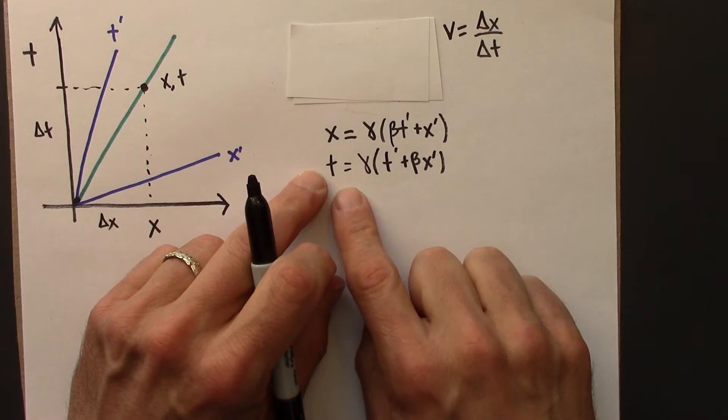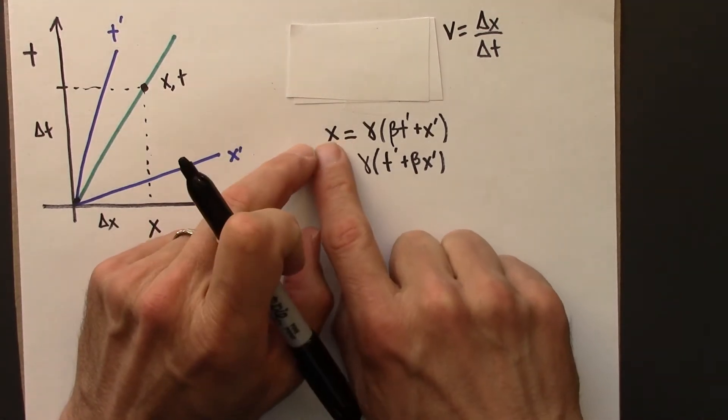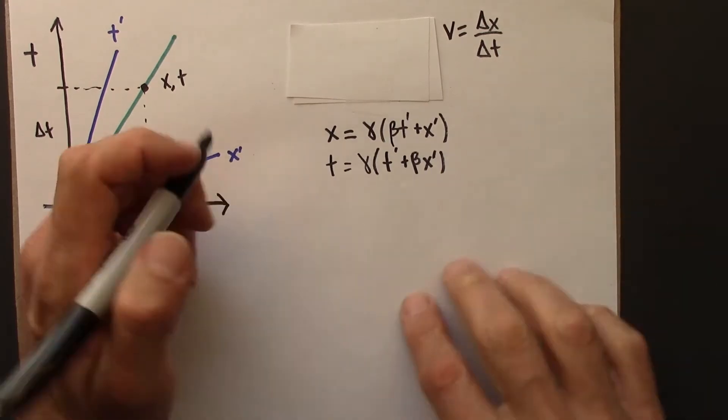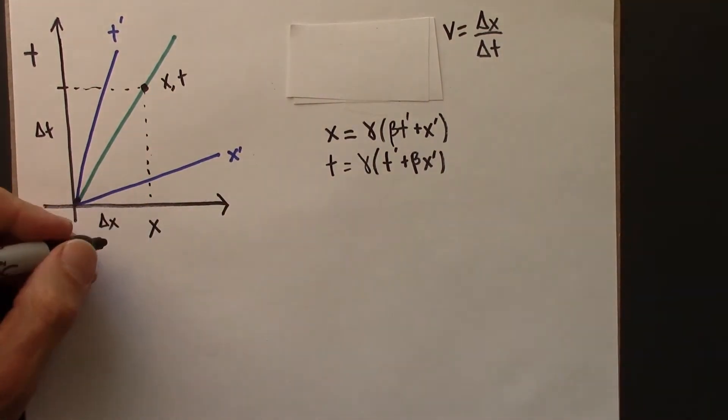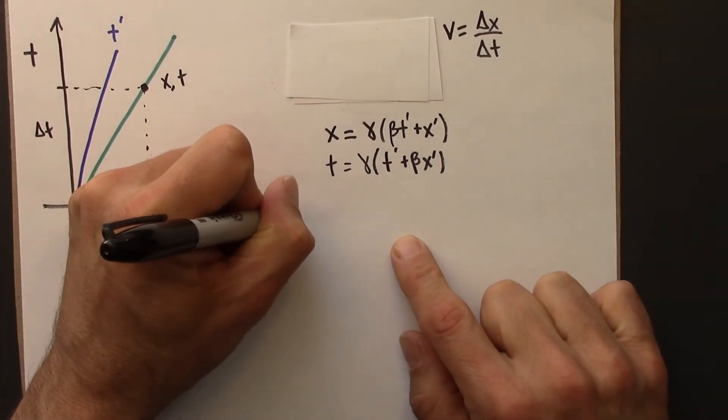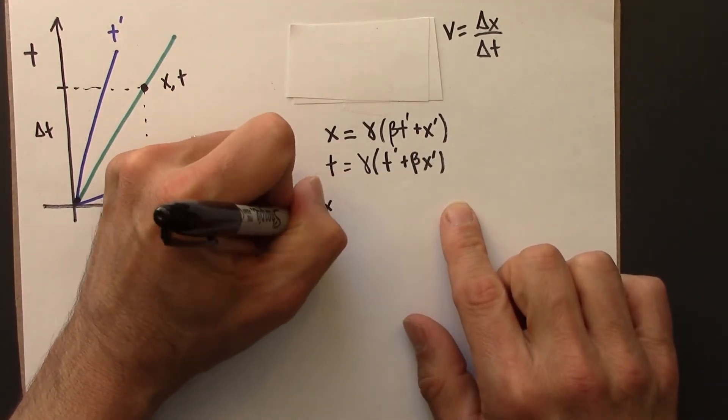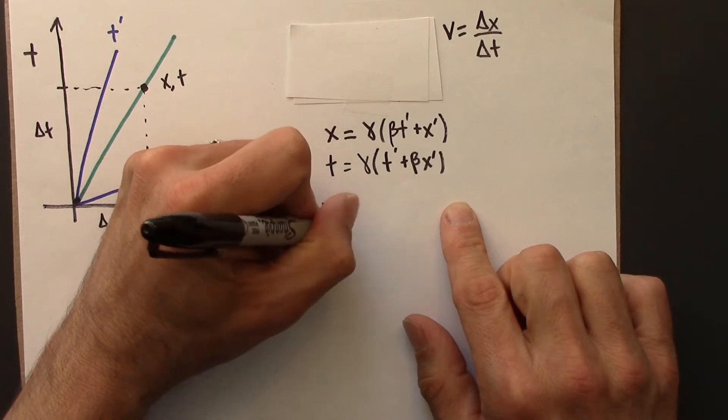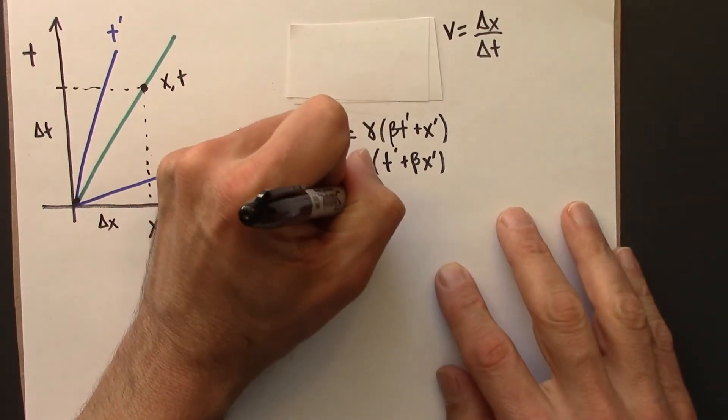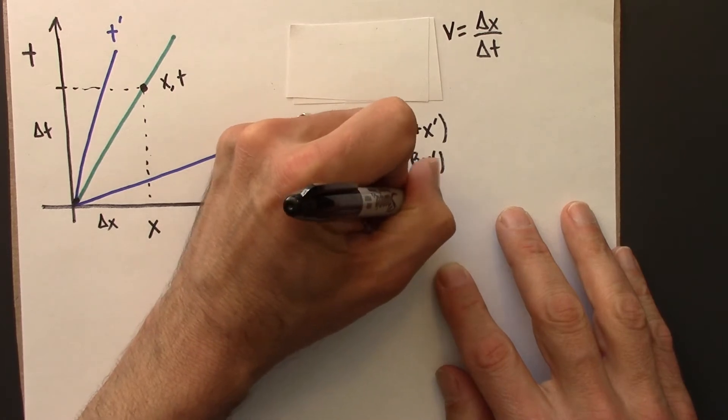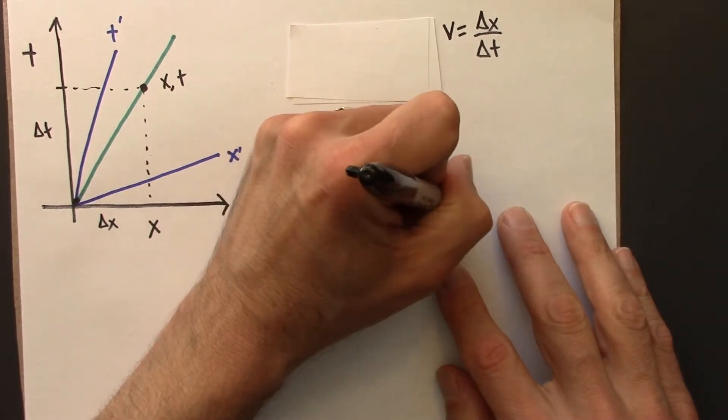And so I'm just going to use delta x and delta t for x and t, and plug into here. So I'll do that here. So v is going to be delta x over delta t. And delta x is this, gamma, beta, delta t prime, plus delta x prime.